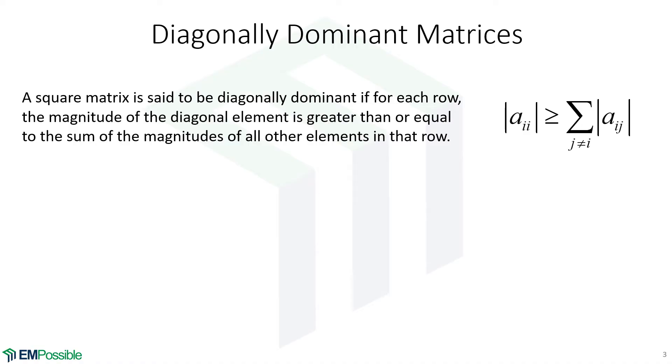So what is a diagonally dominant matrix? Well, what we have to do is check the magnitude of the diagonal element in each row and make sure that it's larger than the sum of the magnitude of all the other elements in that row. Here's an equation describing that: we take the diagonal element in the ith row, look at the magnitude, we're throwing out signs. Then we take every other element in that row except the diagonal element, take the absolute value and add them all up. We need the diagonal element to be that big or greater, and that's called diagonally dominant.